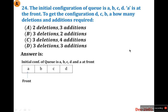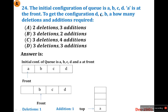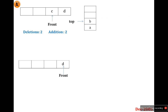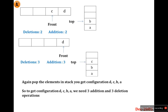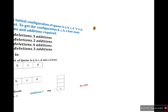Starting with queue A, B, C, D, we need to get D, C, B, A. For each element, we need one deletion and one addition via a stack. We perform three deletions and three additions, placing elements onto the stack, then pop them back to get the configuration D, C, B, A. So the answer is D: three additions and three deletions.